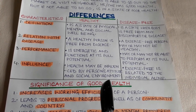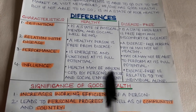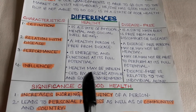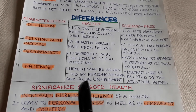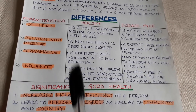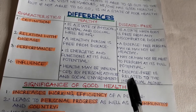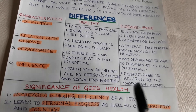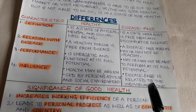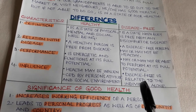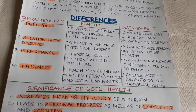Number four — influence: a healthy person's health may be influenced by the person's attitude and social environment — that is, their mental health and social health influence the overall health of a person. A disease-free person is related to the individual alone, because it just refers to physical health.